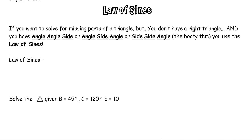This video is on the Law of Sines, which is easier than the Law of Cosines. Just like the Law of Cosines, we use the Law of Sines when we don't have a right angle. If we have a right angle, we use the Pythagorean theorem, sine, cosine, or tangent. We use the Law of Sines specifically for angle-angle-side, angle-side-angle, or side-side-angle — the so-called 'ambiguous case' situations.